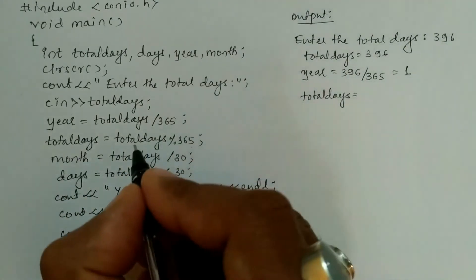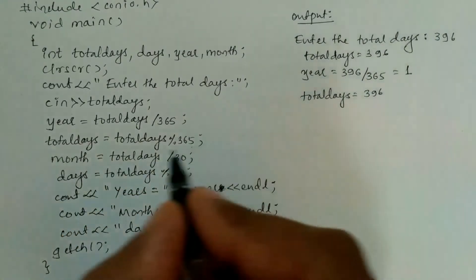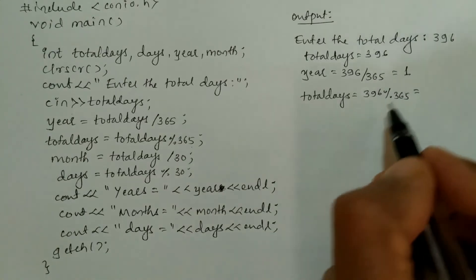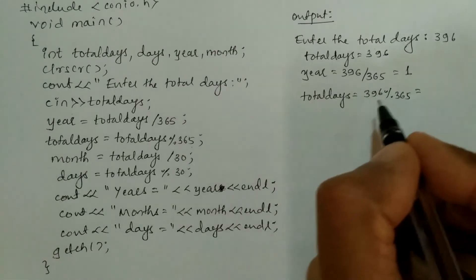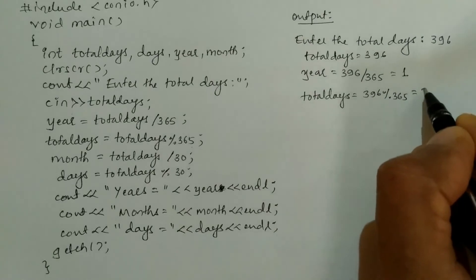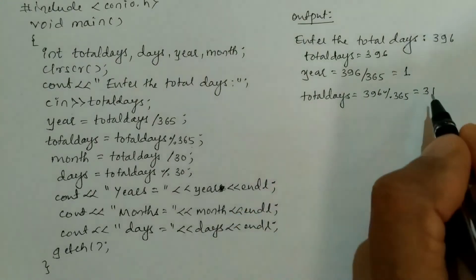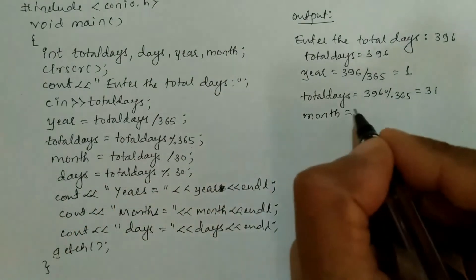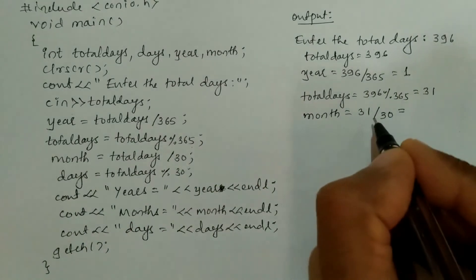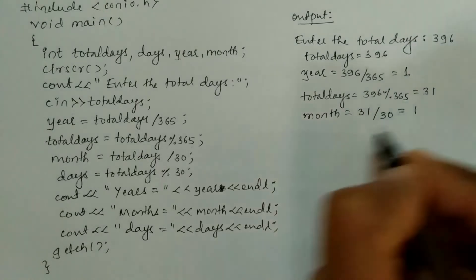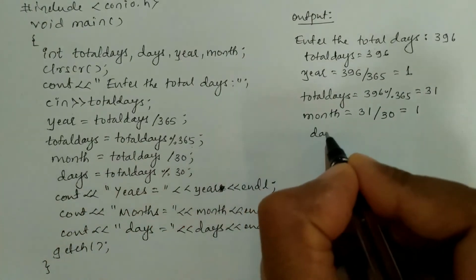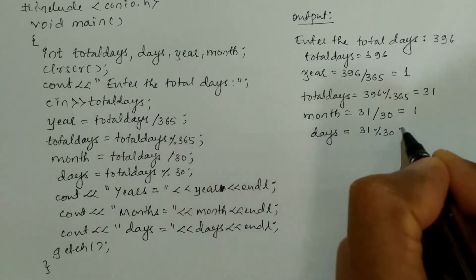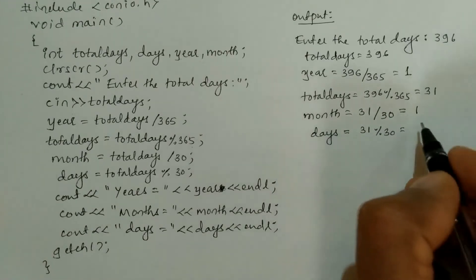Next, total_days = 396 % 365. Modular division gives the remainder: 396 minus 365 equals 31, so total_days is now 31. Then month = 31 / 30. Since 30 ones are 30, this returns 1, so one is stored in month. Then days = 31 % 30, which gives remainder 1, so one is stored in days.